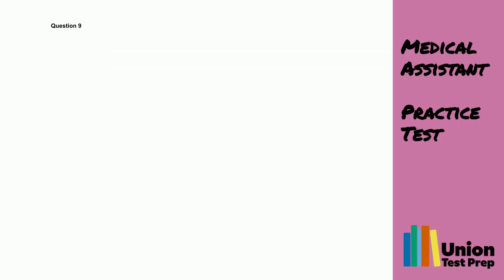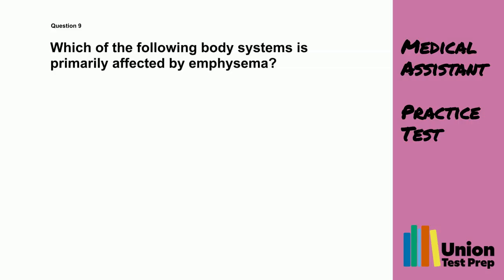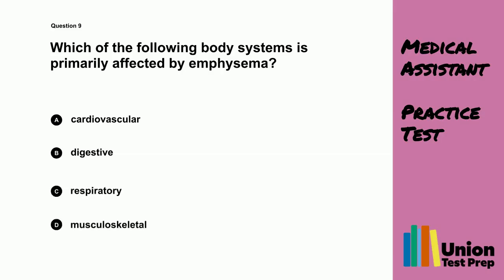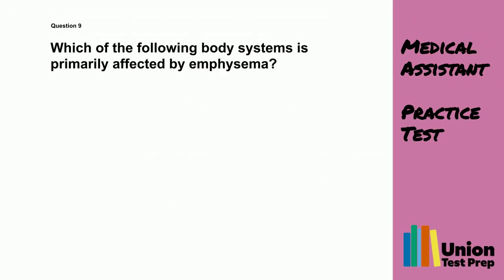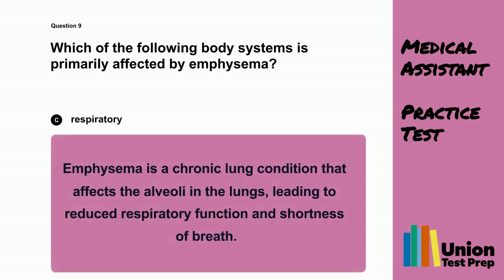Question 9. Which of the following body systems is primarily affected by emphysema? A. Cardiovascular. B. Digestive. C. Respiratory. D. Musculoskeletal. The correct answer is C, Respiratory. Emphysema is a chronic lung condition that affects the alveoli in the lungs, leading to reduced respiratory function and shortness of breath.